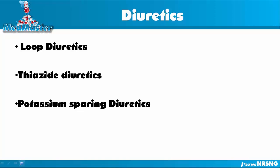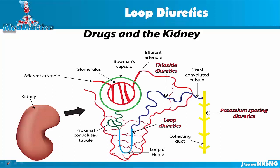Let's talk about the loop diuretic mechanism of action. This diagram represents the nephron, which is the functional unit of the kidney. All blood filtration, formation of urine, reabsorption, and excretion of electrolytes happen in the nephron. We are particularly interested in the reabsorption and excretion of sodium, potassium, and water. Let's understand the parts of the nephron where these processes occur.